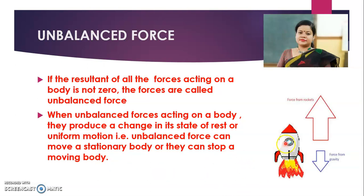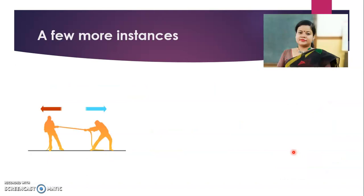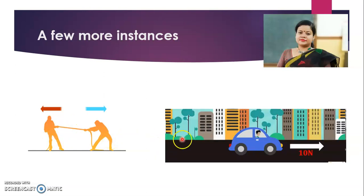Here is an example. The rocket is moving because the upthrust force is more than the force applied by gravity, so it overcomes the force of gravity and moves — this is a result of unbalanced force. A few more instances: in tug of war, unbalanced force is acting and we can see its effect on the two persons. Another example — when the car is moving, all four forces act on it: the force of gravity, the equal and opposite force by the ground, the force applied by the engine, and the frictional force. But the force applied by the engine is greater than the frictional force, so it can overcome it and move.